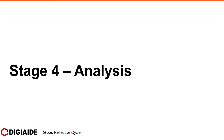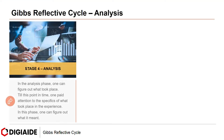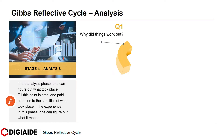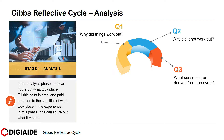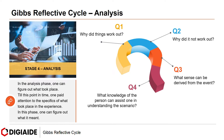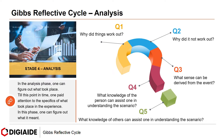Stage 4 is Analysis. In the Analysis phase, one can figure out what took place. Till this point in time, one paid attention to the specifics of what took place in the experience. In this phase, one can figure out what it meant. The questions in this stage: first, why did things work out? Second, why did it not work out? Third, what sense can be derived from the event? Fourth, what knowledge of the person can assist one in understanding the scenario? And finally, what knowledge of others can assist one in understanding the scenario?